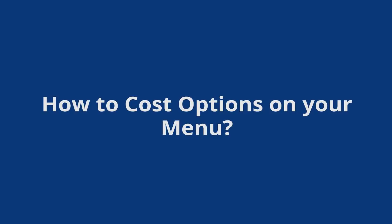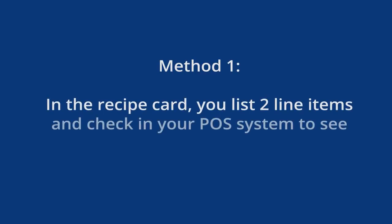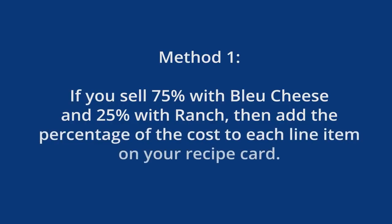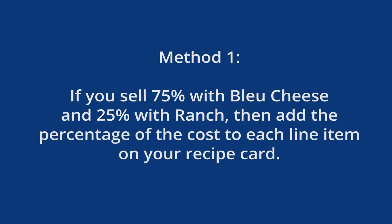There are two basic methods for costing out a recipe with different options in it. The first is that in the actual recipe, you list both ingredients — in this case, the cost of the ranch dressing and the cost of the blue cheese dressing. Then you go back into your computer system and find out how many of each are sold. If you sell 75% with blue cheese and 25% with ranch, then you add that into your recipe cost — 75% of the blue cheese cost plus 25% of the ranch cost. Honestly, far too complicated.